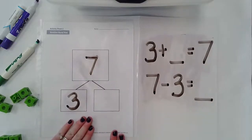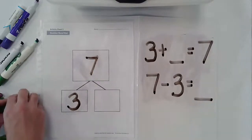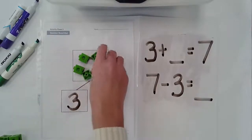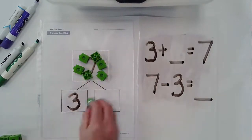Another way I could use is my number bond. I could take my manipulatives: one, two, three, four, five, six, seven.